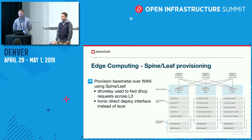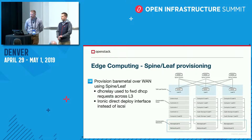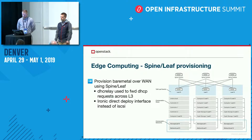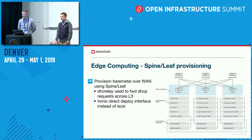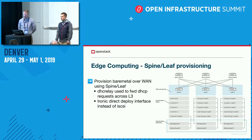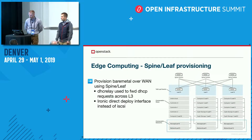To help with DCN deployment we've added support for spine-leaf provisioning, which allows you to provision bare metal over a WAN or L3 routed network using DHCP relay to forward requests across the network. This configuration has been tested with up to 100 milliseconds round-trip latency, and it uses the Ironic direct deploy interface instead of iSCSI.